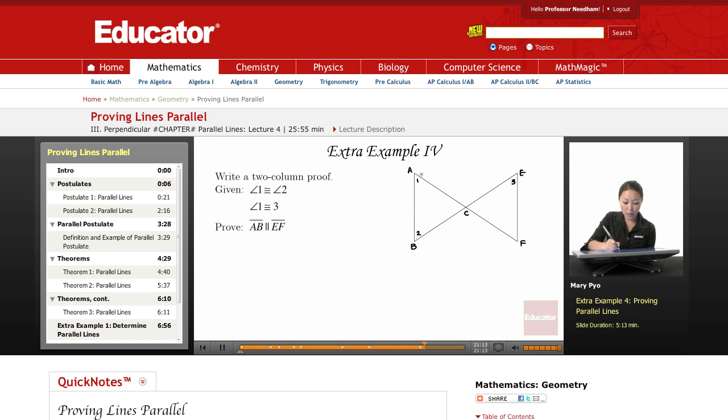Well, angle 1 and angle 2 are congruent. This is congruent. And then angle 1, where's the angle? Okay, angle 1 is congruent to angle 3. Angle 1 is also congruent to angle 3. So, 1 is congruent to 2, and 1 is congruent to 3.